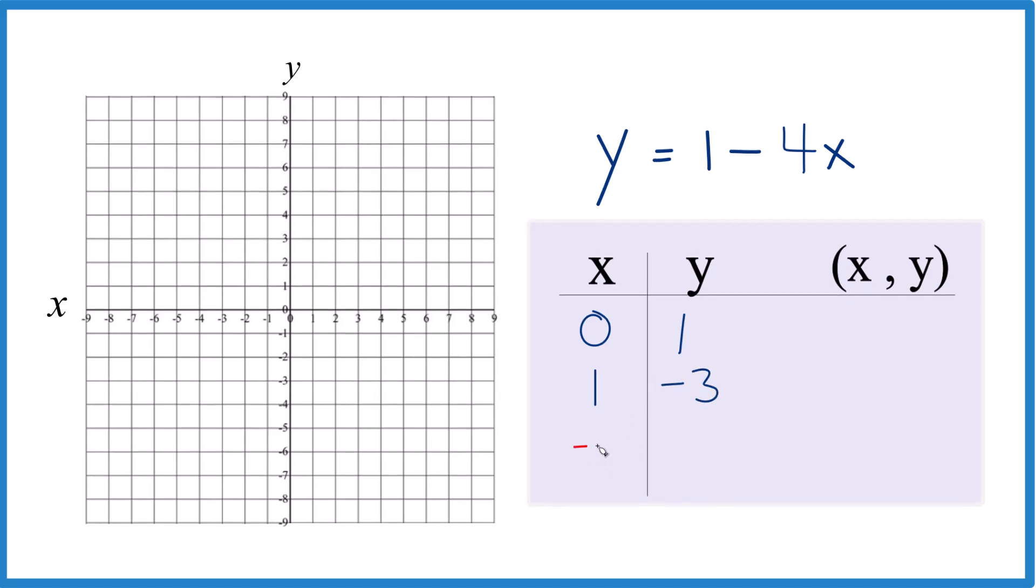And how about just negative 1? Let's see what happens. So negative 4 times negative 1 is 4. So it's just 1 plus 4. We would end up with 5.